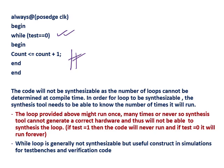The synthesis tool cannot generate correct hardware and thus will not be able to synthesize the loop. For example, if test equals one, then the code will never run, and if test equals zero, it will run forever — for every positive edge of clock the count value will be updated. How is the synthesis tool going to generate hardware for such logic? So that is one of the reasons why this code is not synthesizable, and while loop is generally not synthesizable. But it is a useful construct in simulations, during functionality check, RTL verification, and test bench writing.